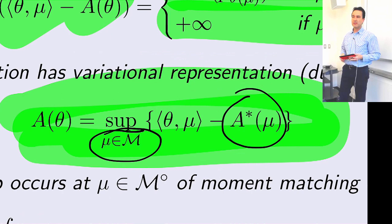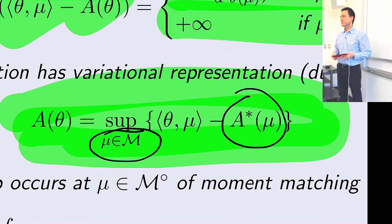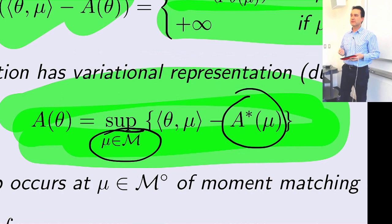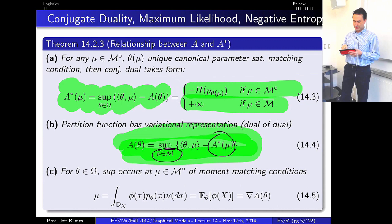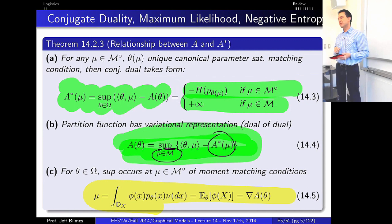That's what we did last time with the beta entropy approximation and the tree outer bound, also called the local consistency polytope. A large number of different approximate inference strategies for graphical models correspond to this approach, where you take either an outer or inner bound on the mean parameter space and various entropy approximations to A-star. The point where everything matches is the moment matching condition.